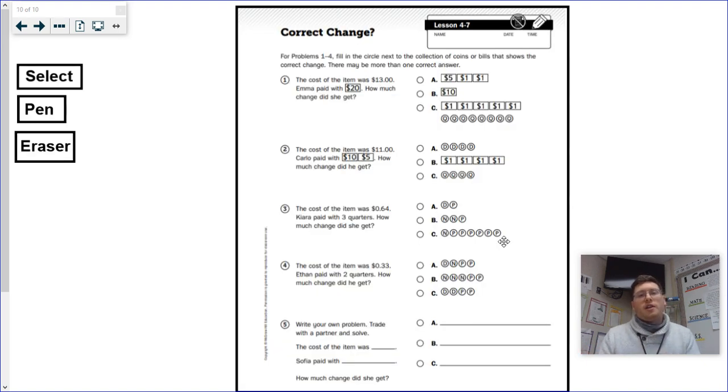So correct change. This is in your Oklahoma essentials book, your workbook. We're going to do the first one together and then I'm going to let you do the rest of them by yourself. So for problems 1 through 4, you're going to fill in the circle next to the collection of coins or bills that shows the correct change. There may be more than one correct answer. That's very crucial.